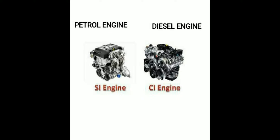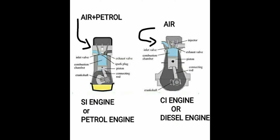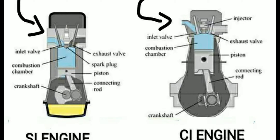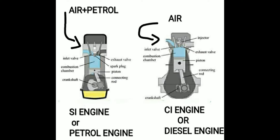How do they differ in components? On the left hand side you can see the SI engine, that is called the petrol engine. In the petrol engine, a spark plug is present — you can clearly see that. From the inlet valve, the air-fuel mixture comes into the cylinder and it is ignited by the spark plug. So it is called a spark ignition engine or petrol engine.